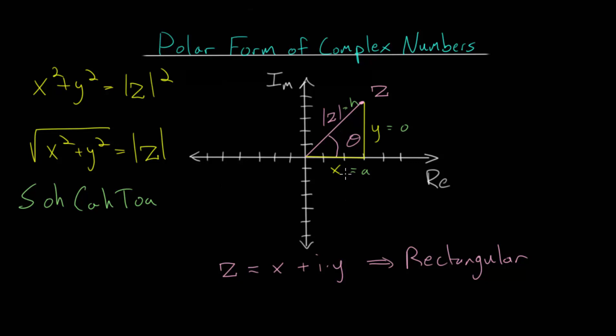So to relate x to theta and this magnitude, we can use the cosine, since the cosine of the angle theta is equal to the adjacent side divided by the hypotenuse. And in this case, the adjacent is x, and the hypotenuse is this magnitude of z, this absolute value of z. And to solve for x, we can just multiply each side by this absolute value of z, meaning that x is just the absolute value of z multiplied by the cosine of the angle.